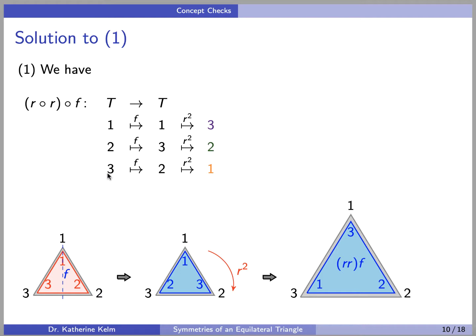And you can see a diagram here showing geometrically what we did. We did F first, and then we did R squared, and what we end up with is this ending position.